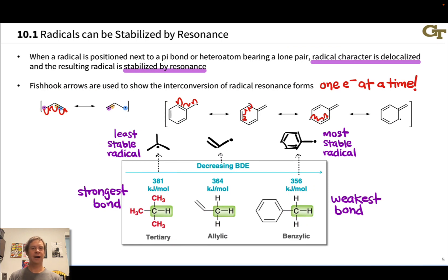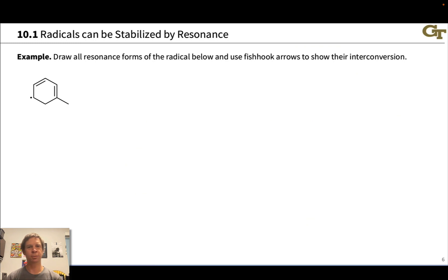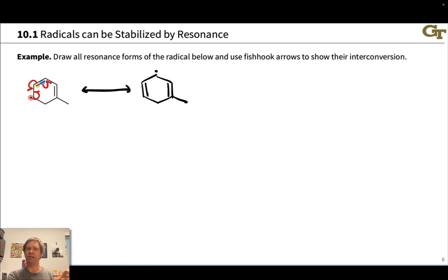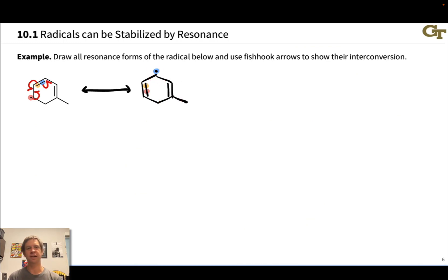Look out for the possibility of a radical at a benzylic or allylic position — these highly stabilized radicals form readily under conditions where we have radicals around. In this example problem, we're asked to draw all resonance forms of the radical shown and use fishhook arrows to show their interconversion. The unpaired electron is adjacent to two pi bonds connected via a single bond, which opens the door to multiple resonance structures. Using electron flow, we can generate the first alternative resonance form — a new pi bond is created on the left-hand side, and the radical character shifts to the top carbon.